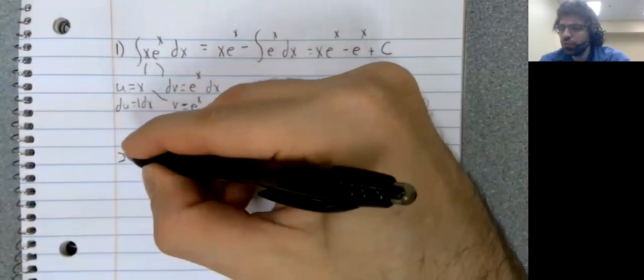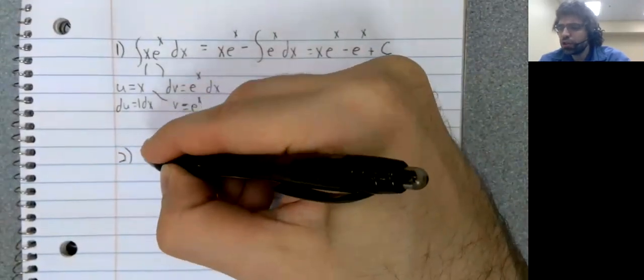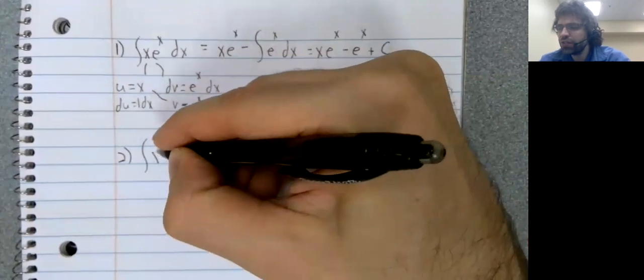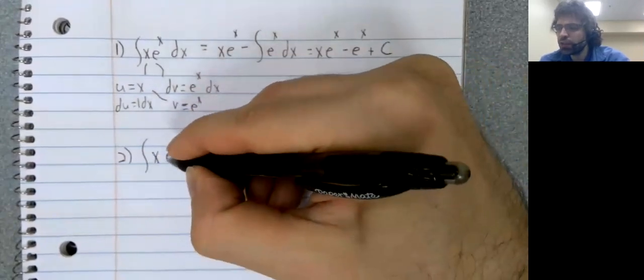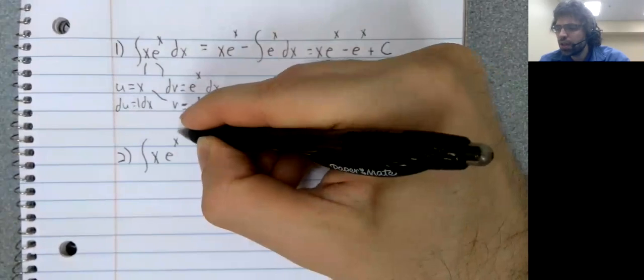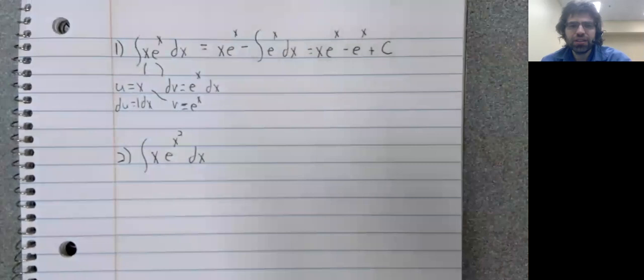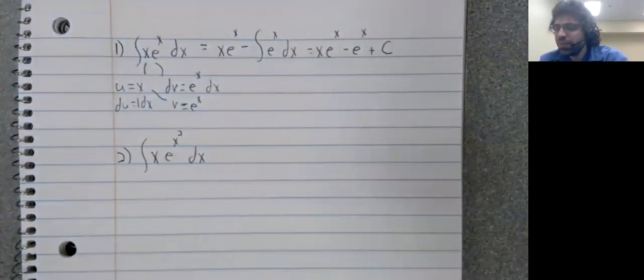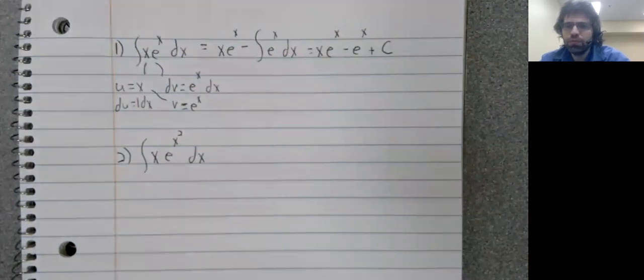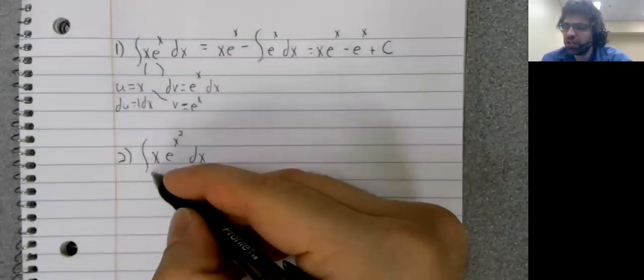Two looks kind of similar to one. I mean, they're placed next to each other intentionally. But if you try to use the method of one, you run into problems almost instantly.